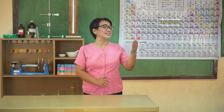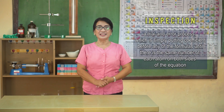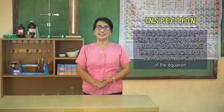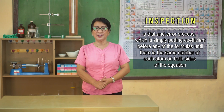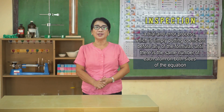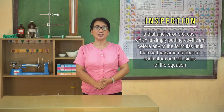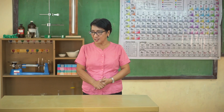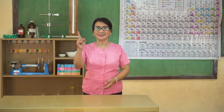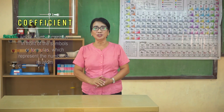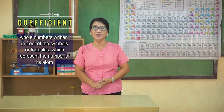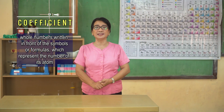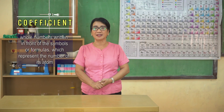An equation can be balanced by inspection, a trial-and-error process which simply involves putting a coefficient before any of the formulas until there is the same number of each atom on both sides of the equation. Coefficients are the whole numbers written in front of the symbols or formulas, which represent the number of each atom.